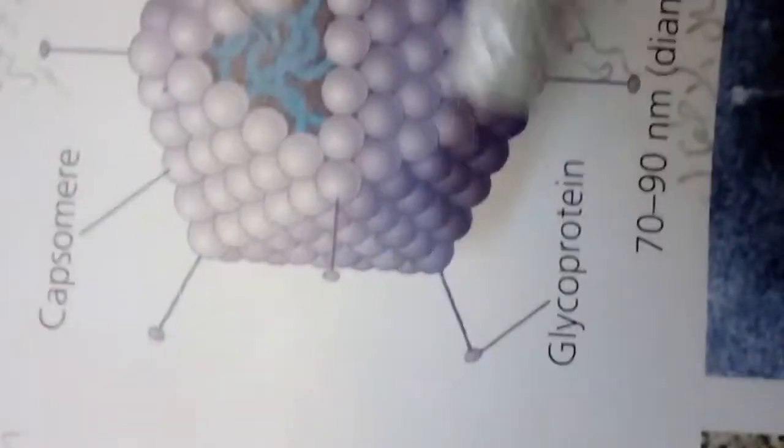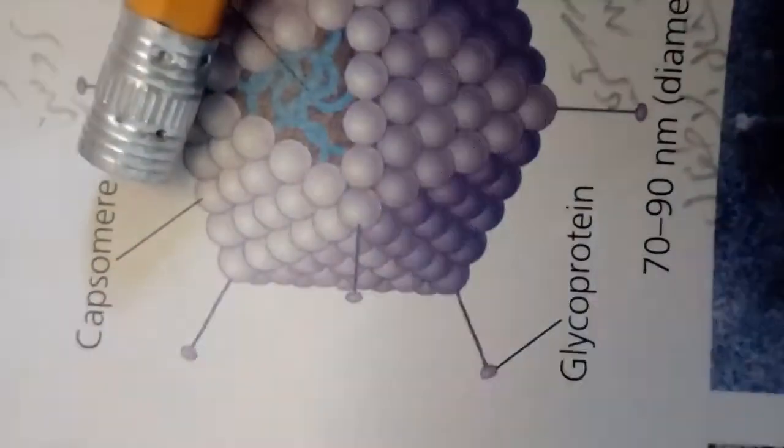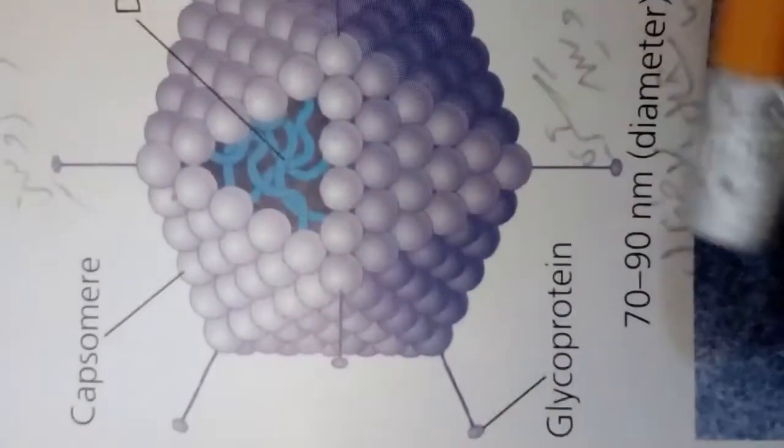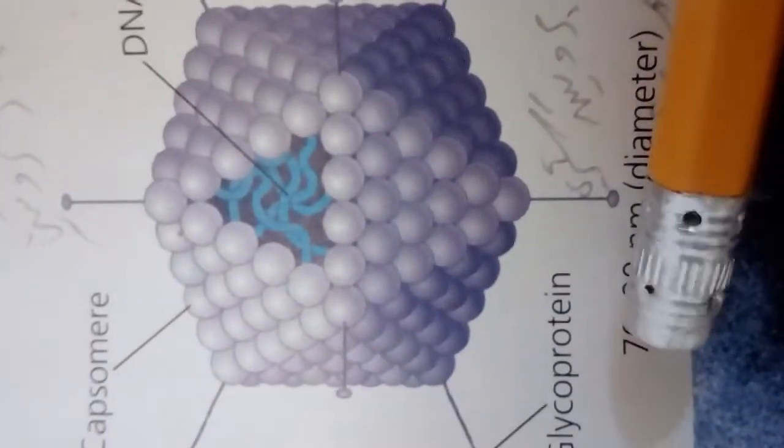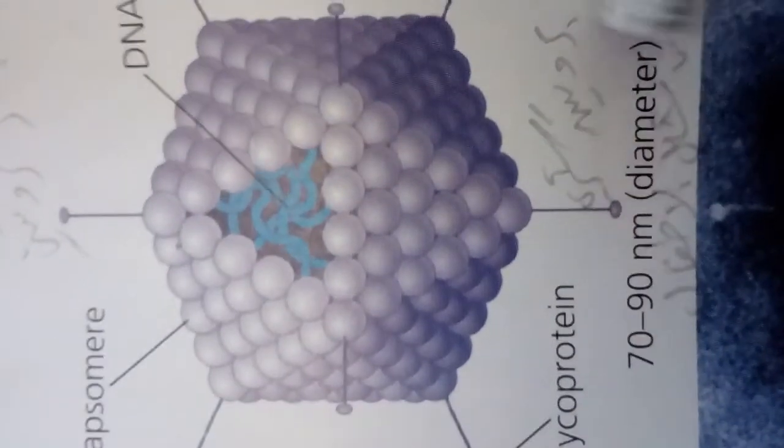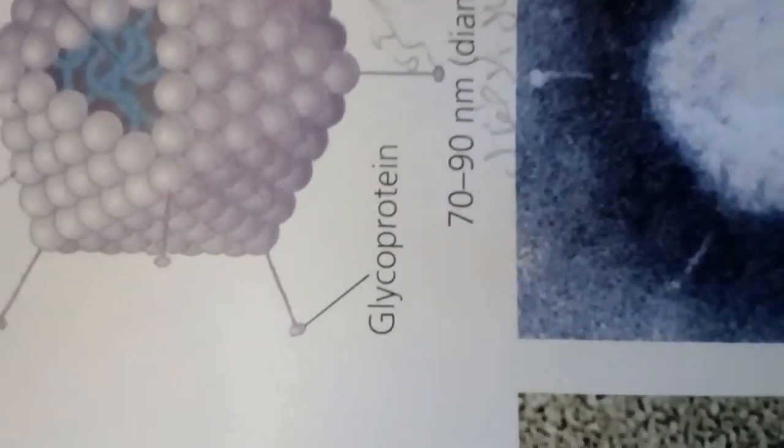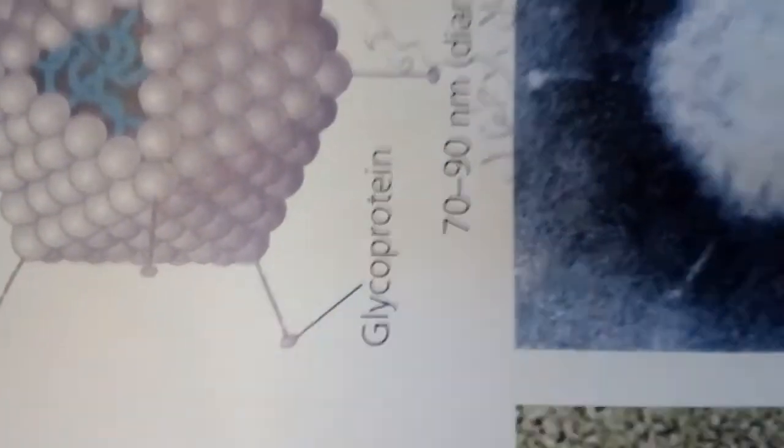Notice in this figure: a closer look at protein capsomers. Notice the size, 70 to 90 nanometers. Adenoviruses have a polyhedral capsid with a glycoprotein spike at each vertex.